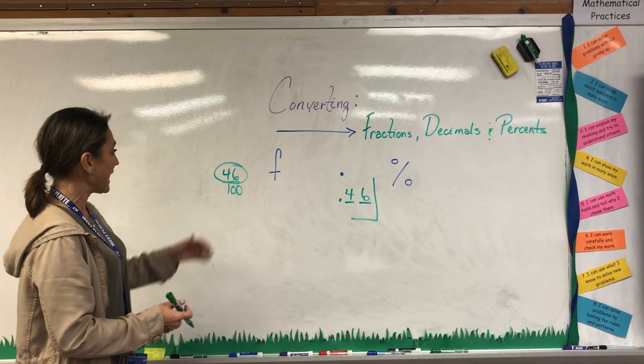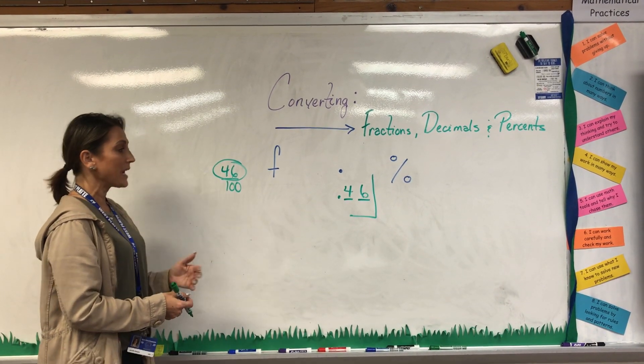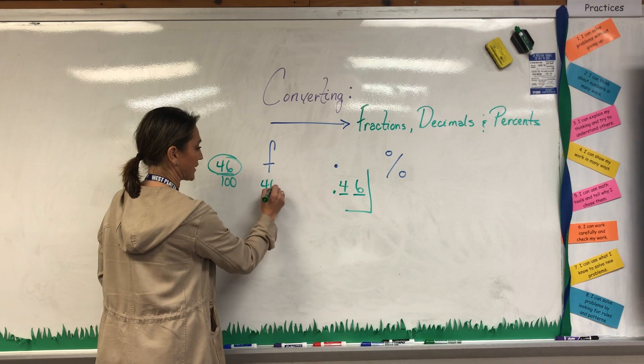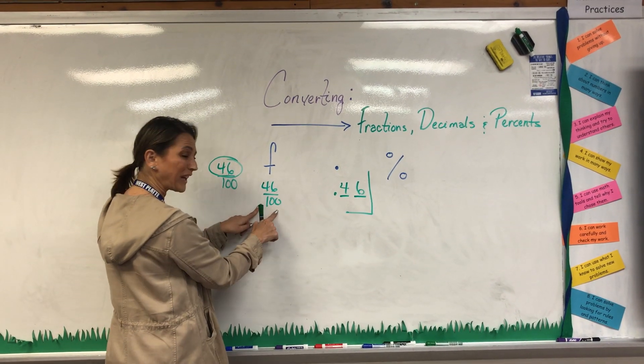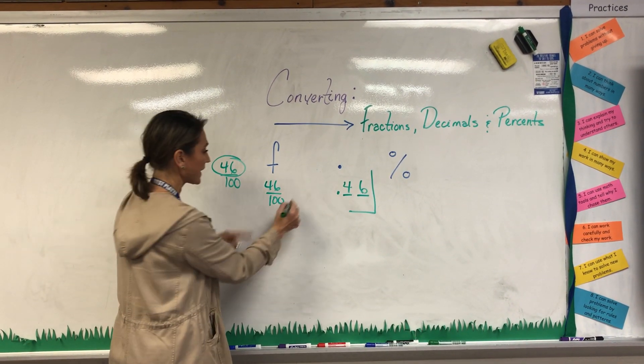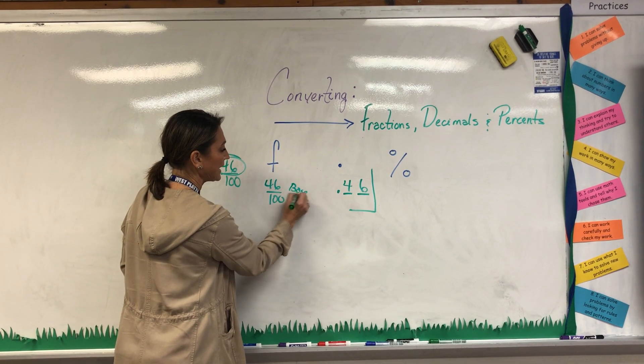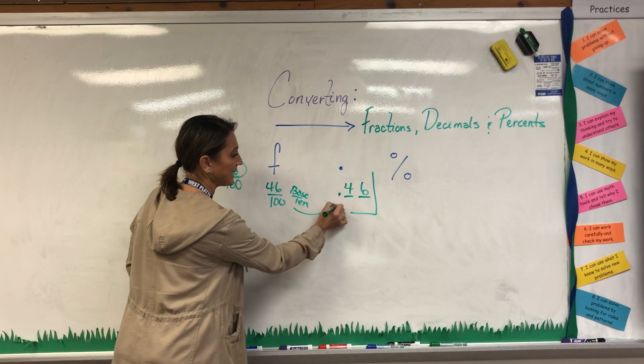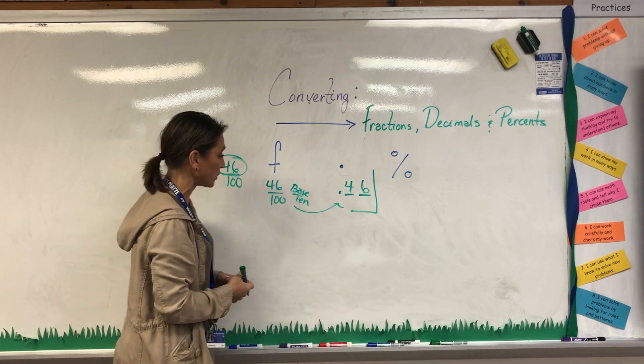Now if I have a fraction and I can see it here easily and I can say that that's 46 hundredths because it has what we call a base 10 number, then I can really be reading that fairly easy to turn it into 46 hundredths as a decimal.